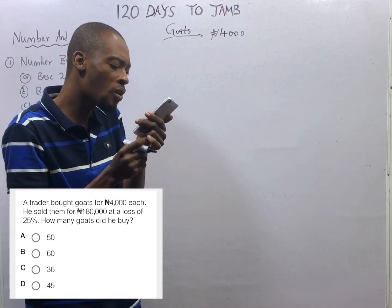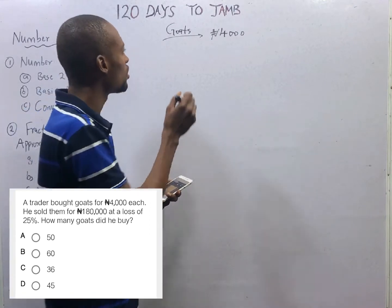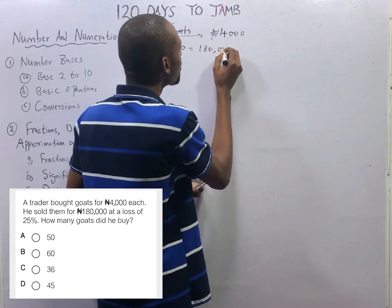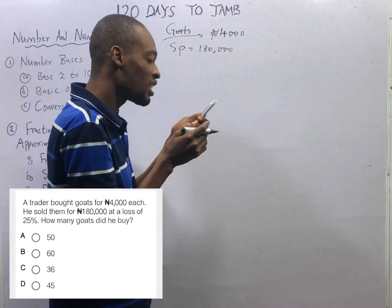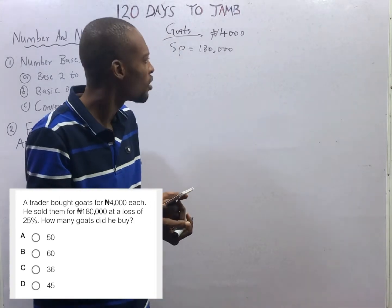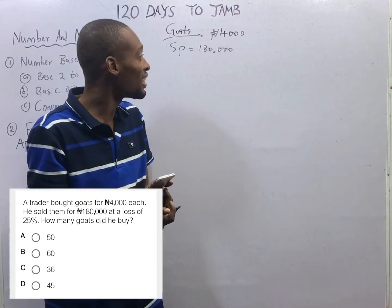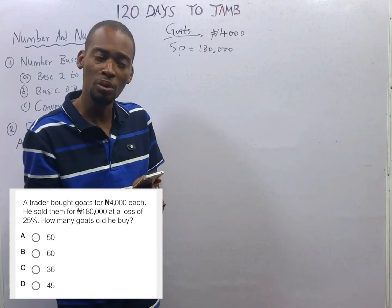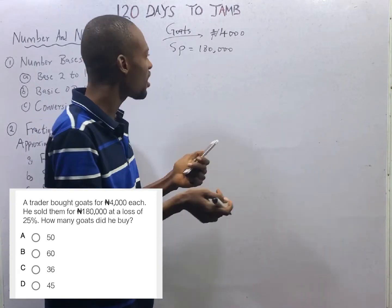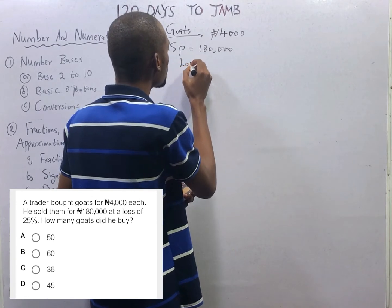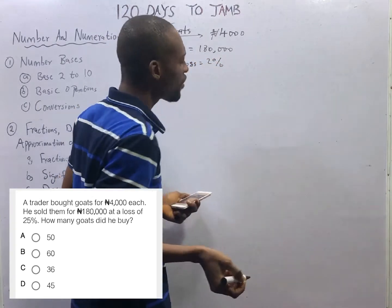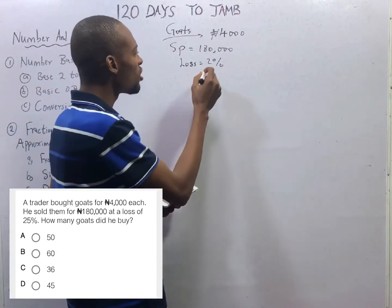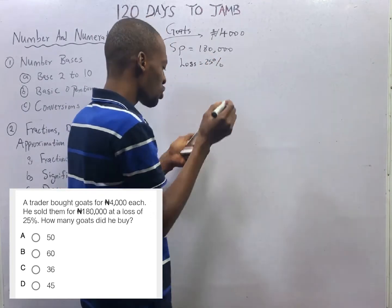He sold them for 180,000 naira. Even after selling the goods for 180,000 naira, the trader still ran a loss. This means the trader bought many goats. The loss is 25%. And don't forget that loss is cost price minus selling price, but this loss is in percent — 25% loss.